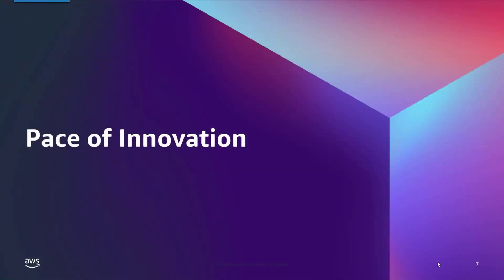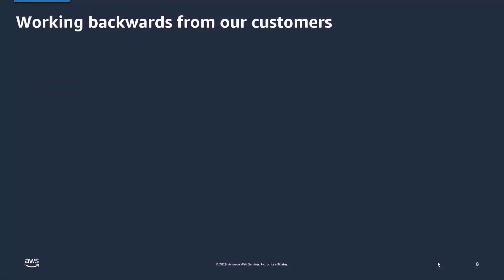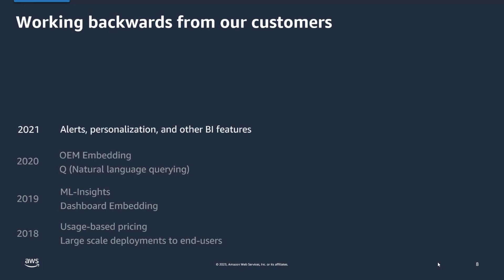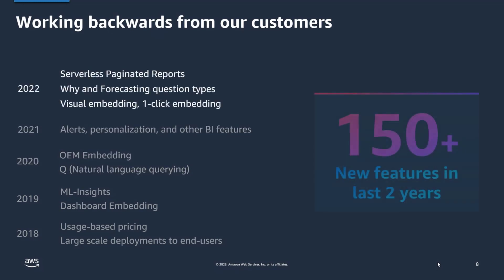Let's look at the pace of innovation and how QuickSight has been evolving over the years. We always work backwards from our customers. In 2018, we started with usage-based pricing and large-scale deployments. In 2019, we launched ML Insights and dashboard embeddings. In 2020, we launched Q — natural language querying capabilities. In 2021, we launched LMS personalizations and many other BI features. And 2022 was a great year where we launched serverless paginated reports, why-type questions and forecasting in Q, visual embedding, and one-click embedding — over 150 features launched in the last few years.